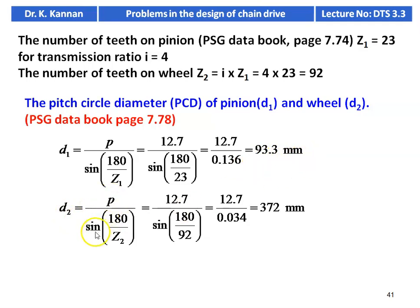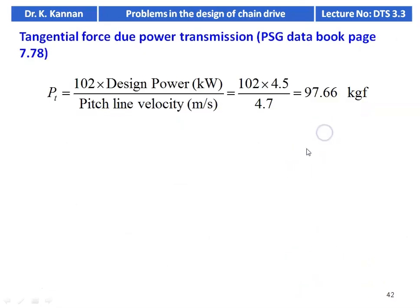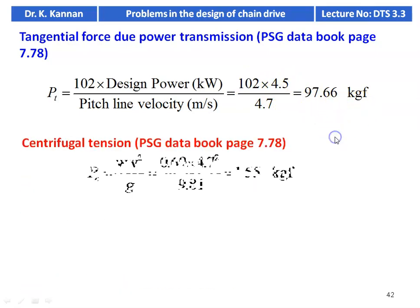PCD of the wheel: D2 = 12.7 / sin(180/92) = 12.7 / 0.034 = 372 mm. Pitch line velocity: V = π D1 N1 / 60 = π × 0.0933 × 960 / 60 = 4.7 m/s. Tangential force: Pt = 102 × design power / V = 102 × 4.5 / 4.7 = 97.66 kgf. Centrifugal tension: Pc = W V²/g = 0.69 × 4.7² / 9.81 = 1.55 kgf.